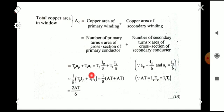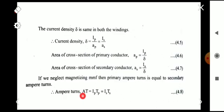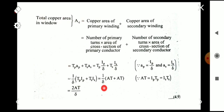Substituting A_p = I_p / δ and A_s = I_s / δ into the expression, we get A_c = T_p × (I_p / δ) + T_s × (I_s / δ). Taking 1/δ outside gives A_c = (1/δ) × (T_p I_p + T_s I_s). Since the ampere-turns on both sides are equal to AT, we have T_p I_p = T_s I_s = AT. Therefore, A_c = (1/δ) × 2AT = 2AT / δ.